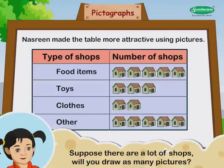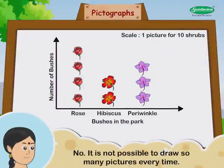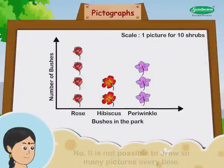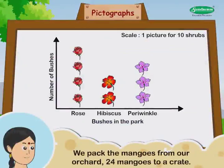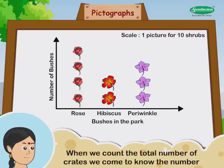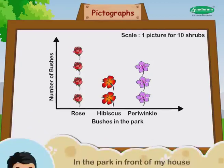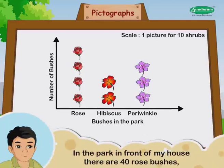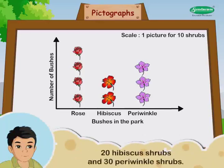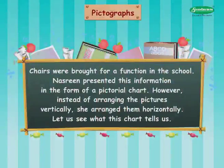Suppose there are a lot of shops — will you draw as many pictures? No, it is not possible to draw so many pictures every time. Just as we pack 24 mangoes to a crate and count crates to know the total, we can do the same with pictures. For example, in the park in front of my house there are 40 rose bushes, 20 hibiscus shrubs, and 30 periwinkle shrubs. Using a scale where one picture represents 10 shrubs, we can make a table to show this.